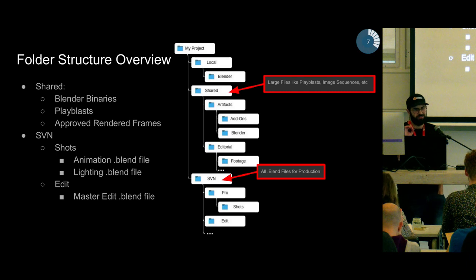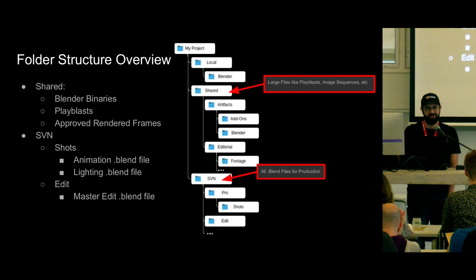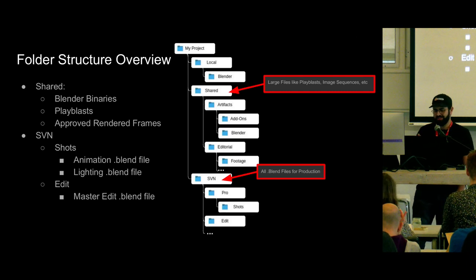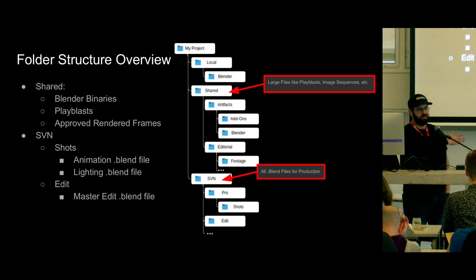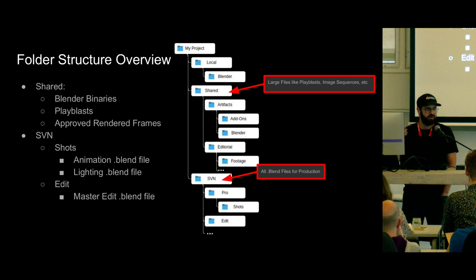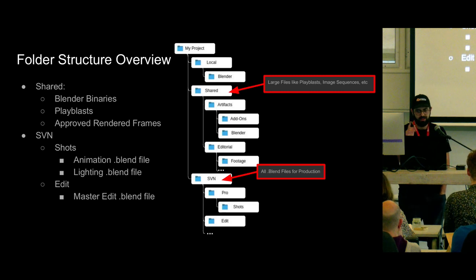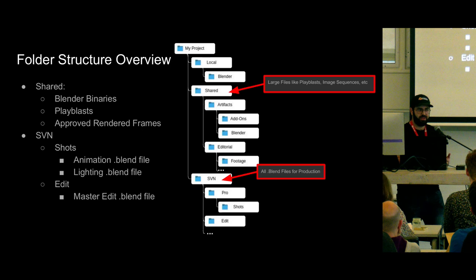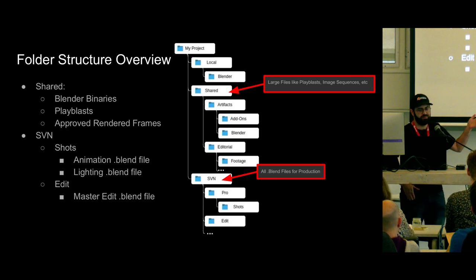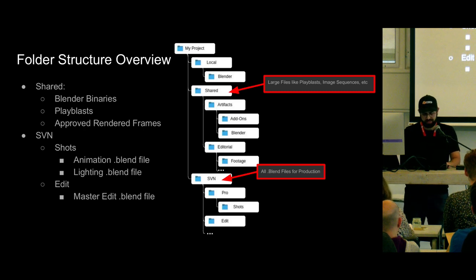Let's talk about what's actually in the folders. We put all our .blend files inside the SVN directory — that includes animation, lighting, compositing, FX, etc., as well as the master editing file. The shared directory is for things that don't need version control: larger things like play blasts, your Blender binaries, and the actual rendered frames you create.